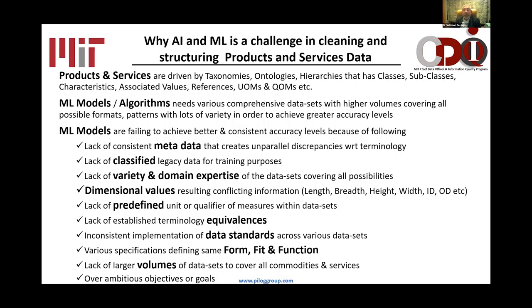Why we struggle to achieve better and consistent accuracy levels with ML models comes down to: lack of consistent metadata creating unparalleled discrepancies in terminology; lack of classified legacy data for training; lack of variety of domain expertise — whether we're working with ball bearings or entering the medical field; dimensional values resulting from conflicting information (length, breadth, height, width, inner diameter) with no indication which they refer to; lack of predefined units of measure; lack of established terminology for equivalences (one person calls it 'inside diameter,' another calls it something else but means the same thing); inconsistent implementation of data standards; various specifications defining the same form, fit, and function; lack of large volumes of data covering all commodities; and overly ambiguous goals from customers.